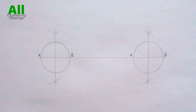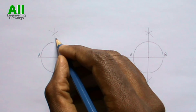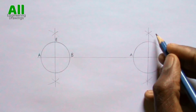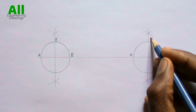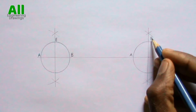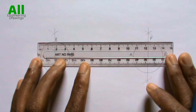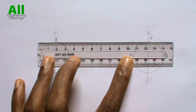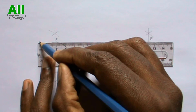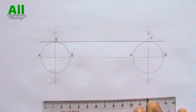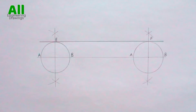Label the points where the bisectors intersect the circumference of the circles at the top. Now draw a line through E and F. This line through E and F is the required tangent.